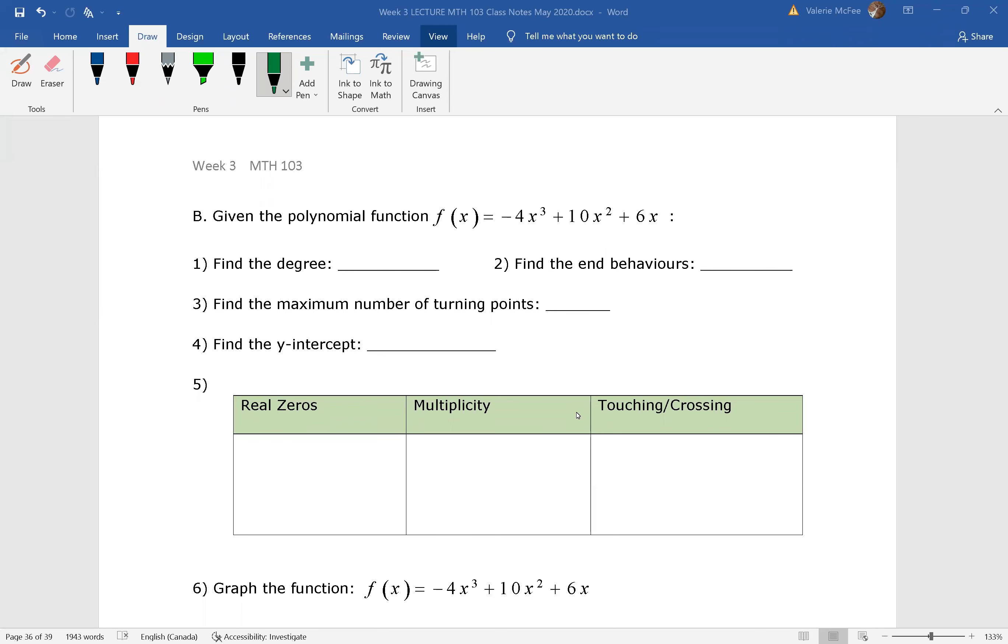Let's look at two more examples of graphing polynomial functions. So here we are in Part B, given this f of x. I would like you to do questions 1, 2, 3, and 4.